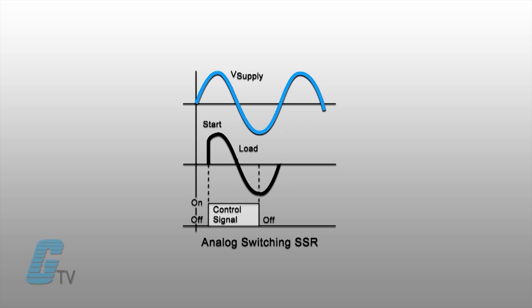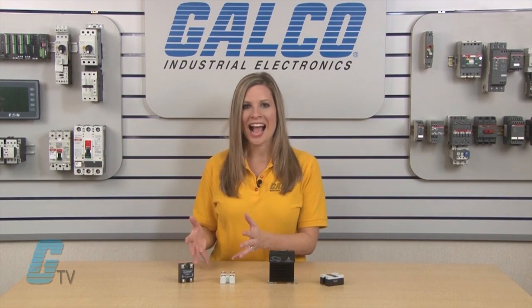Analog switching relays have an infinite number of possible output voltages and are proportional to the input voltage or current. An analog switching relay has a built-in synchronizing circuit that can achieve phase angle control. These relays can be ideal for soft starting or limiting high inrush current.